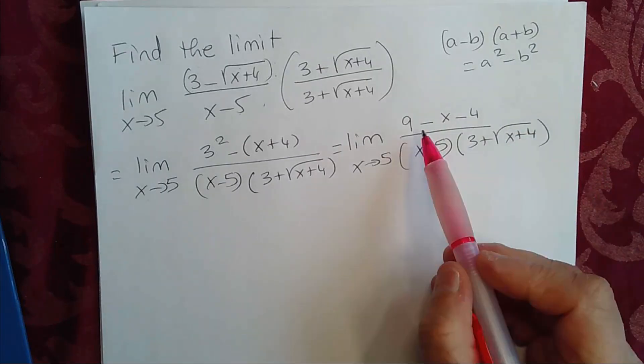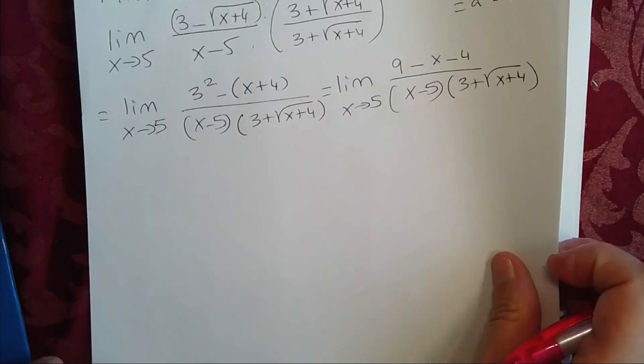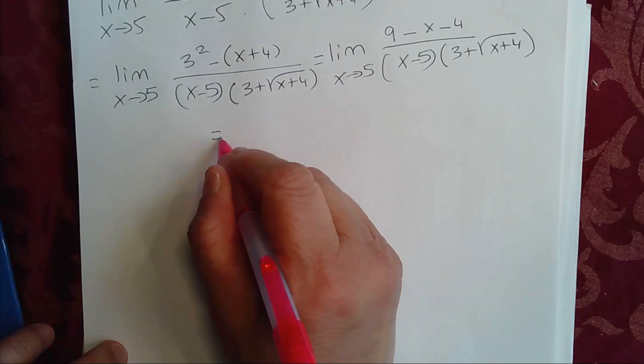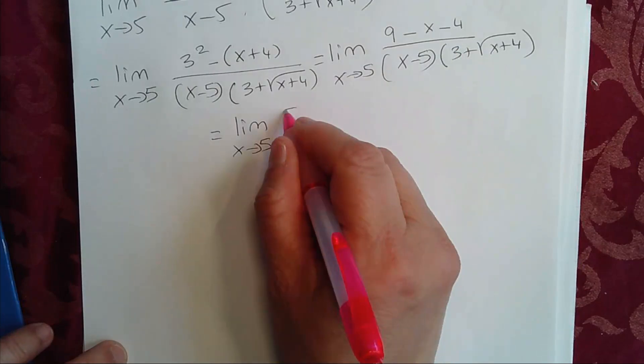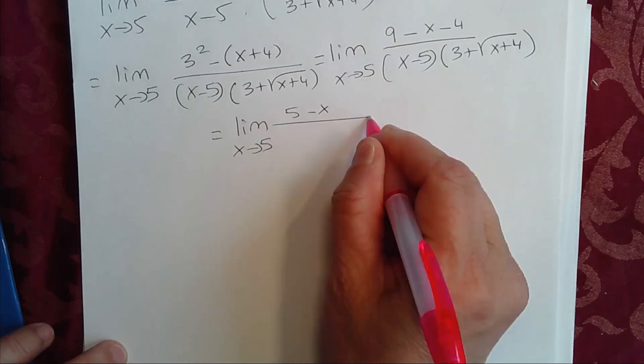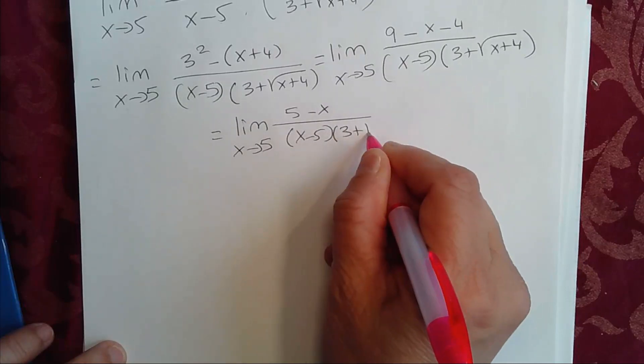So 9 minus 4 gives us 5, so this is equal to the limit as x approaches 5. 9 minus 4 is 5 minus x divided by x minus 5 times 3 plus square root of x plus 4.